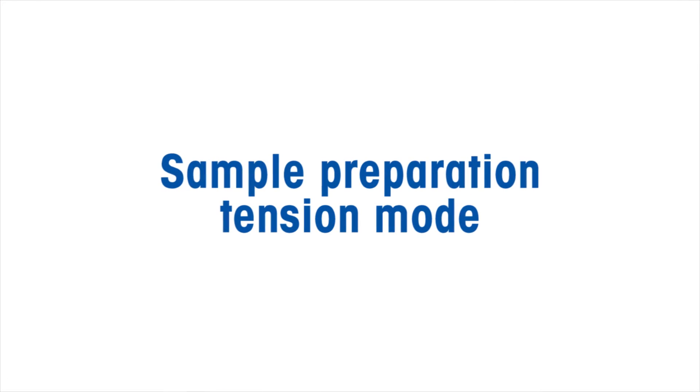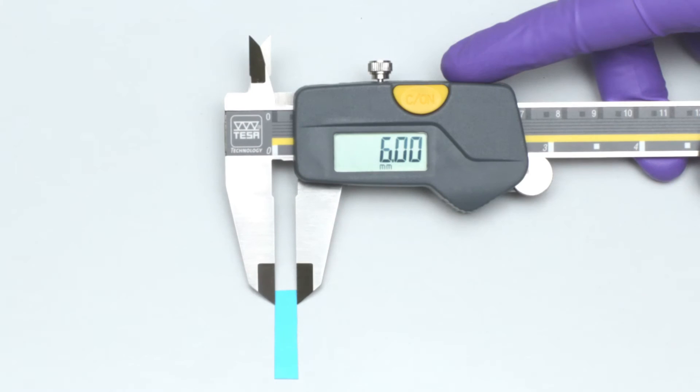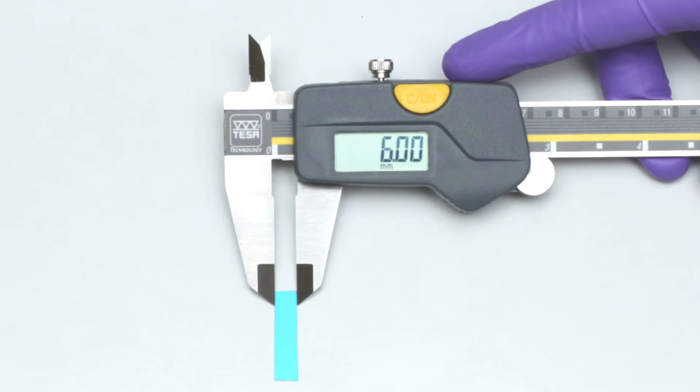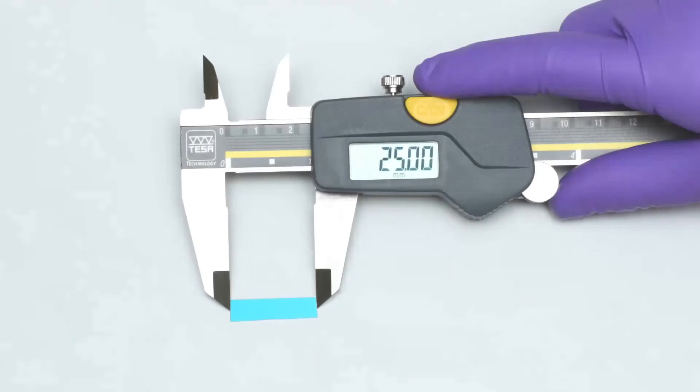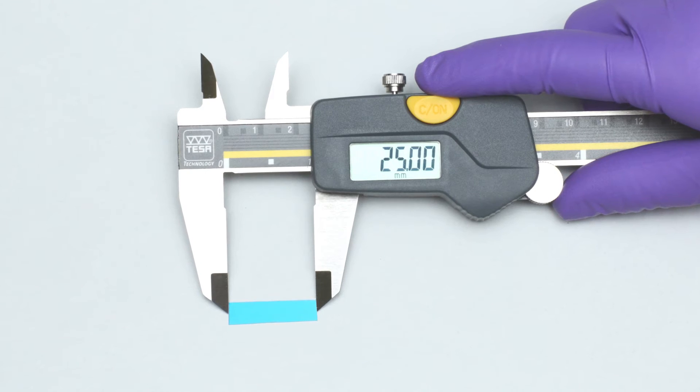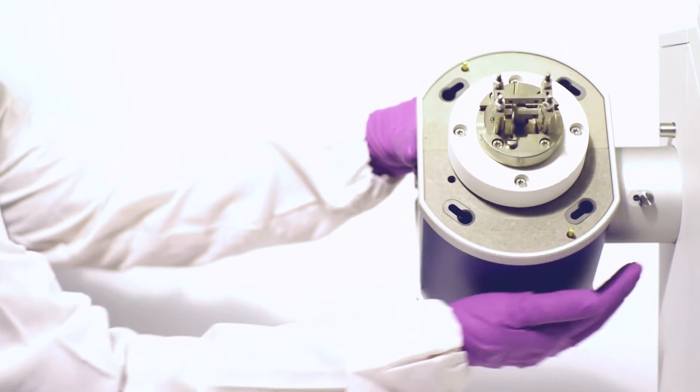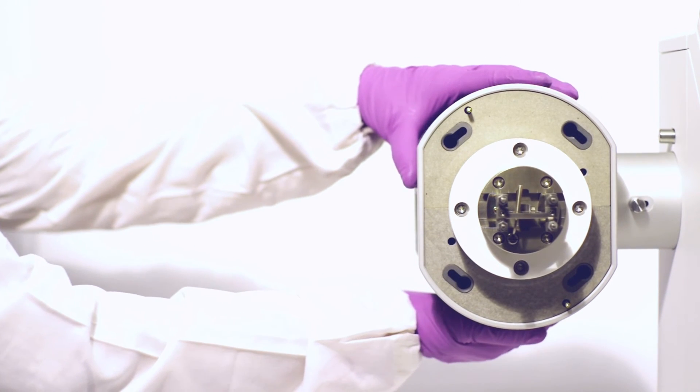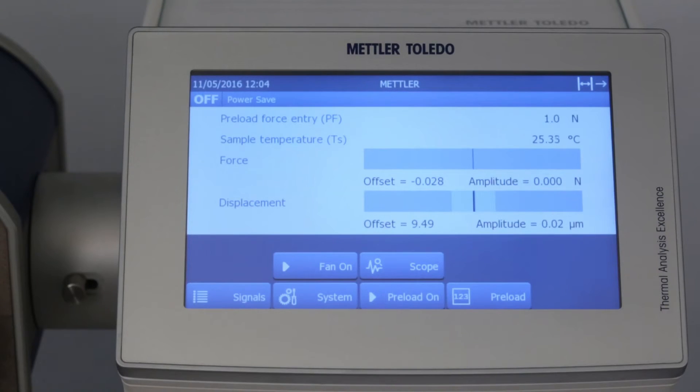Sample preparation for tension measurement: A polyethylene terephthalate sample of 6 mm width and 25 mm length is prepared for the measurement. First, we need to bring the measuring head into a horizontal position. Before we clamp the sample, it is important that we enable a preload force.